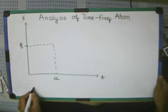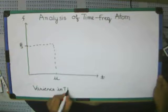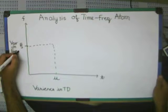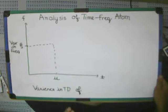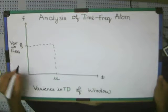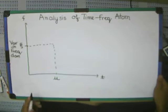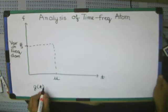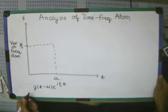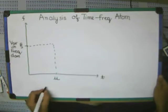What we do now is try to find the variance in the time domain and variance in the frequency domain of the window. If I take some window like g times e raised to the power j zeta t, then what will be its variance? The variance in time will be computed from this function.